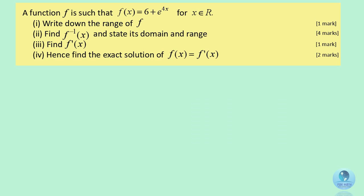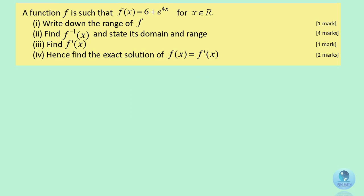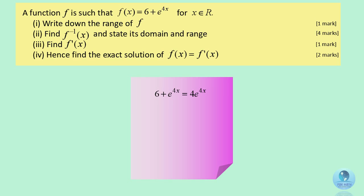To find f prime, the first derivative of f, differentiate the function to get 4e to the power of 4x. When f(x) equals f prime of x, substitute both equations: 6 plus e to the power of 4x equals 4e to the power of 4x. Solving the equation, you get x equals 1 over 4 times the natural log of 2.